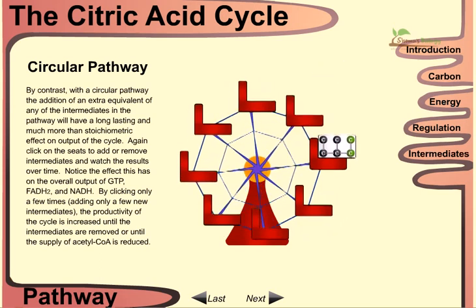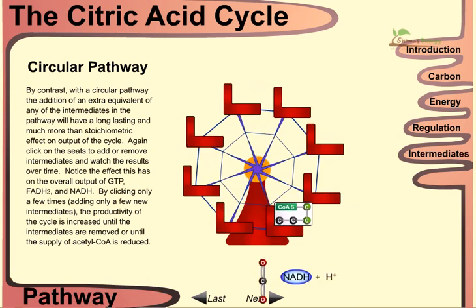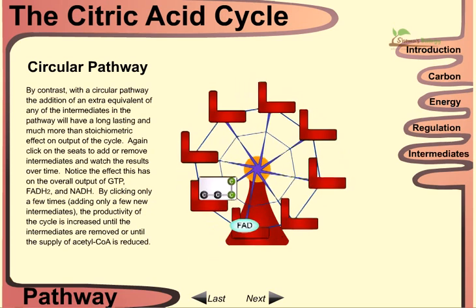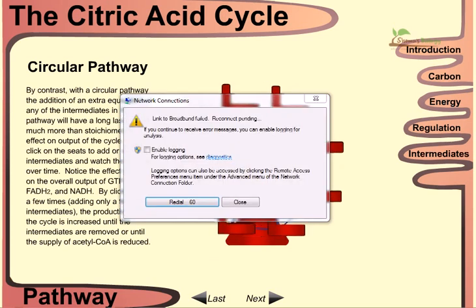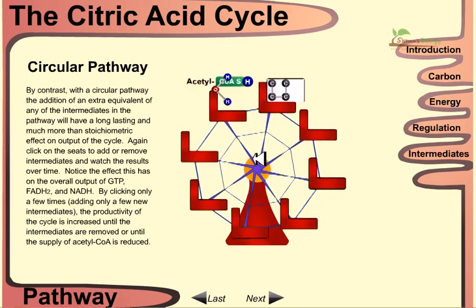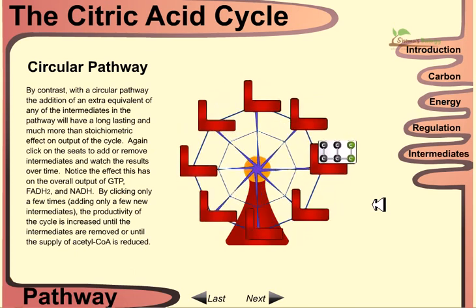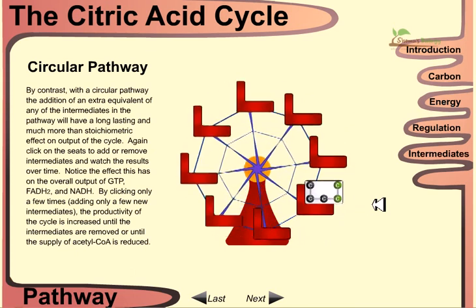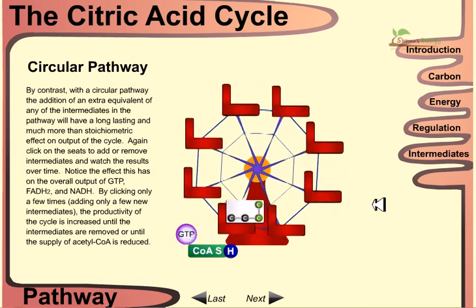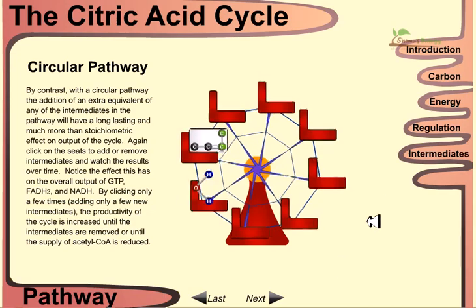In a linear pathway, increasing an intermediate increases the product proportionally. But in the circular pathway, adding or increasing intermediates has a long-lasting effect on the reaction — it continues to amplify output until the molecules are removed.